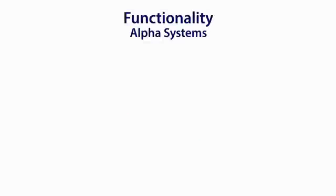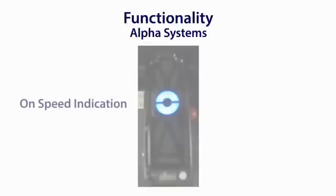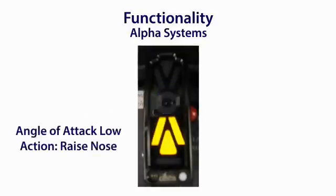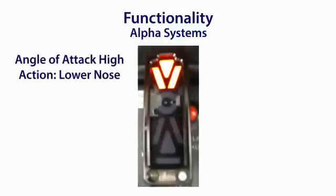The Alpha Systems device features an on-speed donut and two carats indicating what action must be taken to adjust the angle of attack. It can be calibrated from within the cockpit and gives a verbal warning when the aircraft is approaching the stall. This warning is usually in advance of the installed stall system, which gives the pilot advanced warning for stall avoidance. The device has multiple audio warning sounds which can be selected by the pilot.